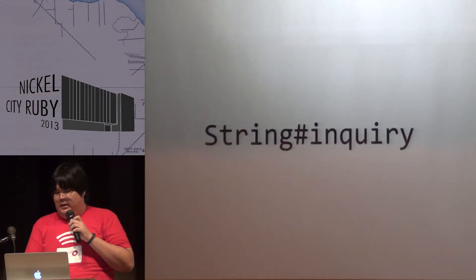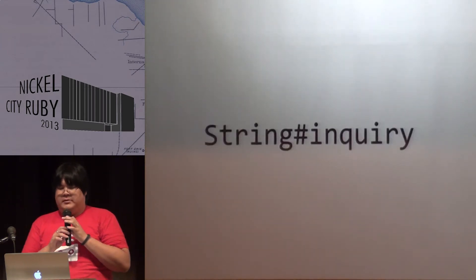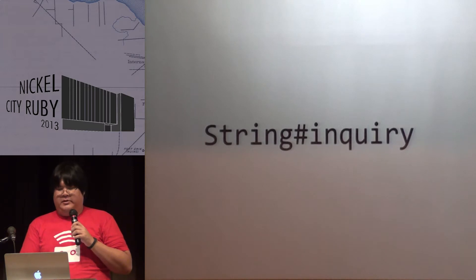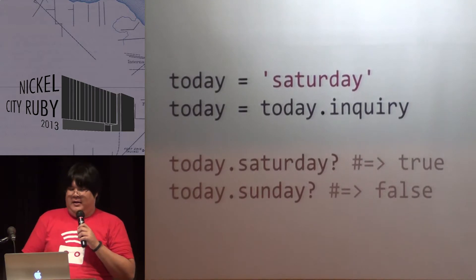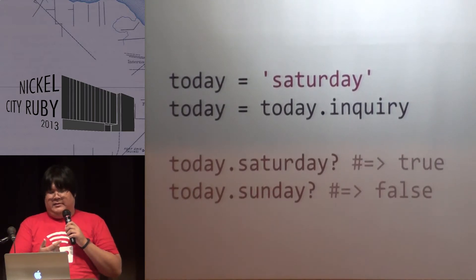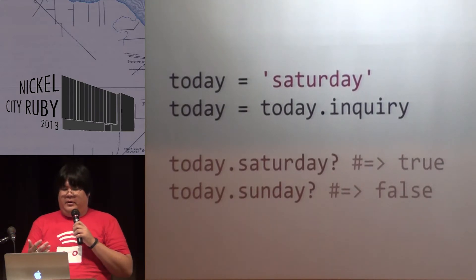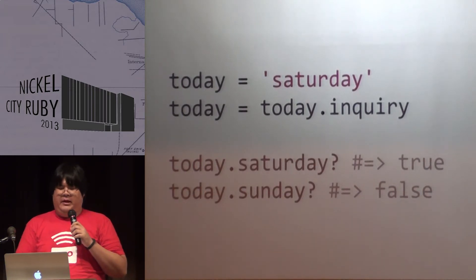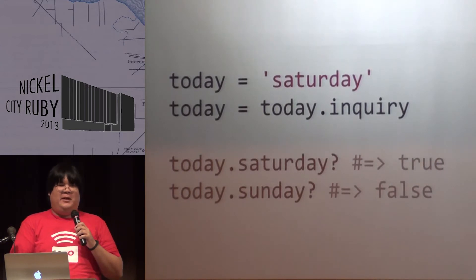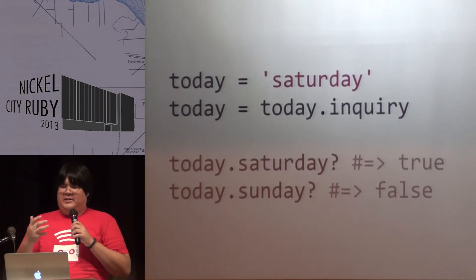First, let's talk about string. ActiveSupport adds a method called string inquiry, which makes you able to inquire a string. So in this example, you can say today is Saturday, and you call today dot inquiry, and then you can ask if today is Saturday — it just matches the method name to the string.